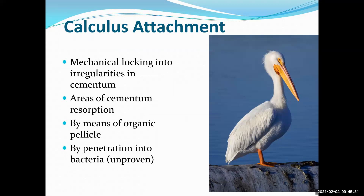Calculus can attach to different things — it's a mechanical locking into the irregularities of cementum. Root surface calculus is much more difficult to remove than enamel surface calculus because enamel is smoother. The cementum can also resorb a little bit, giving more roughness that calculus can bond into. There's also thought that calculus can penetrate into the bacteria itself. This bacteria is really, really smart stuff.